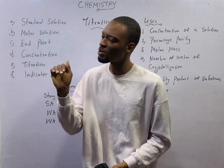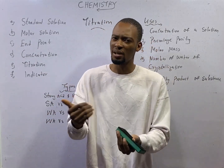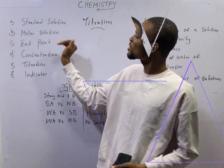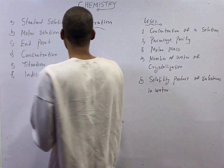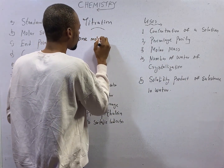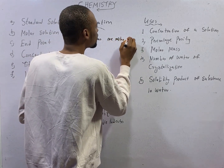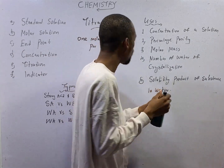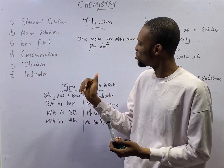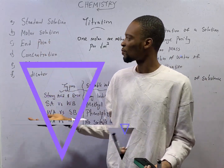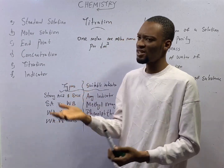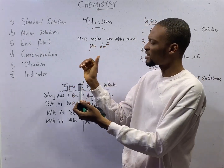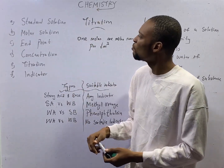A standard solution is a solution whose concentration is known. If you are given a solution and its concentration — either in mol/dm³ or in grams/dm³ — provided the concentration is known, that solution is a standard solution. A molar solution of any substance is one which contains one mole or one molar mass per dm³. So if a solution contains one mole per dm³ or one molar mass per dm³, it is referred to as a molar solution.